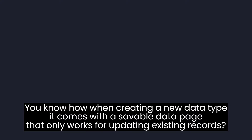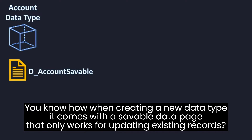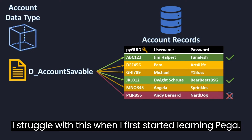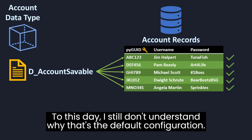Do you know how, when creating a new data type, it comes with a saveable data page that only works for updating existing records? I struggled with this when I first started learning PEGA. To this day, I still don't understand why that's the default configuration.